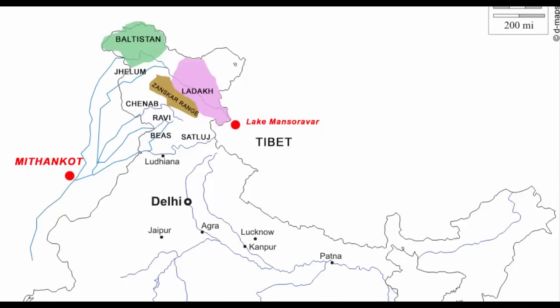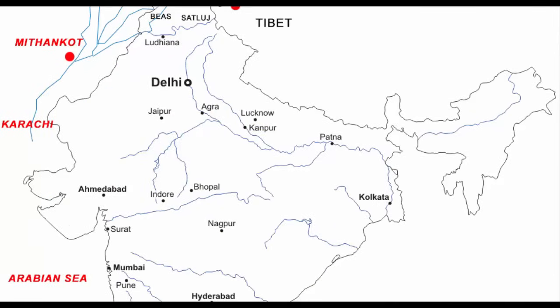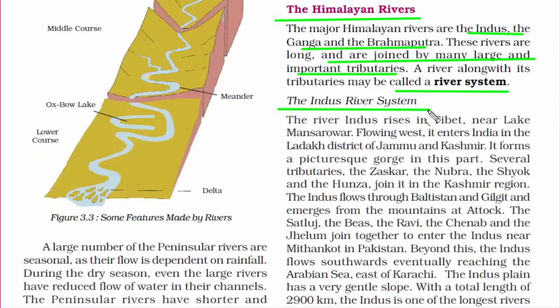Most of the Indus river is in Pakistan — we have just a little more than one third of its water. Beyond this, the Indus flows southwards, eventually reaching the Arabian Sea from east of Karachi. So this was all about the Indus river system.